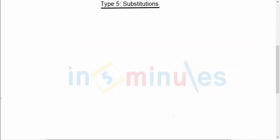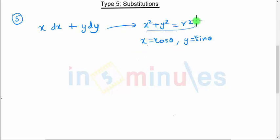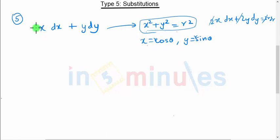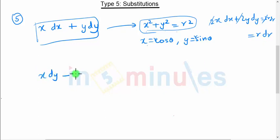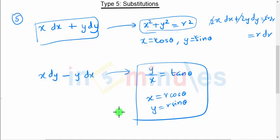The fifth substitution: we can substitute x squared plus y squared equal to r squared using the polar form, where x equals r cosθ and y equals r sinθ. Taking the derivative gives x dx plus y dy equal to r dr. For x dy minus y dx, substitute y/x equal to tan θ with x equal to r cosθ and y equal to r sinθ.